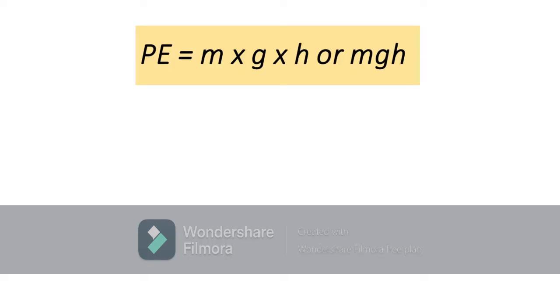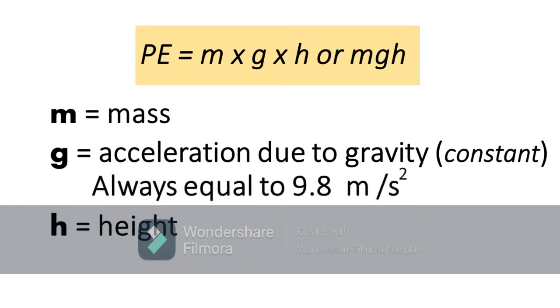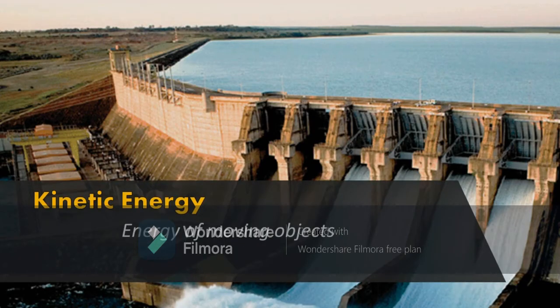The formula for potential energy is M times G times H or simply as MGH where M is mass, G is acceleration due to gravity, H is height. Please take note that G is always 9.8 meter per second squared.